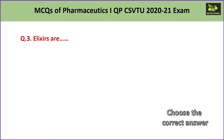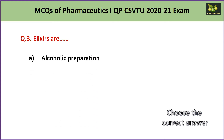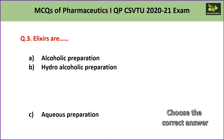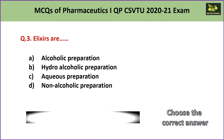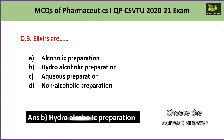Question number 3: Elixirs are A. alcoholic preparation, B. hydroalcoholic preparation, C. aqueous preparation, or D. non-alcoholic preparation. If you remember the definition of elixir, elixirs are sweetened hydroalcoholic preparations. Hence the answer is B — hydroalcoholic preparation.